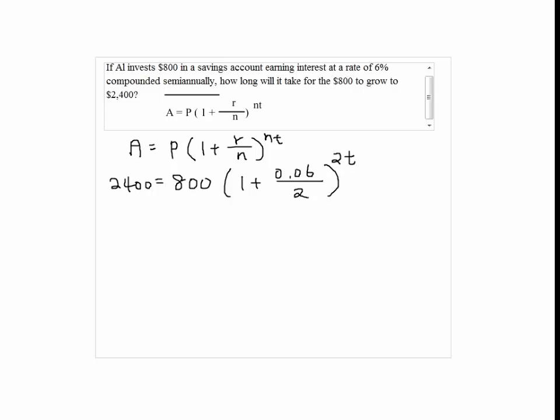So we are looking for T. So first we are going to divide both sides by 800, so we have 3 equals 1 plus 0.06 over 2 to the 2T.